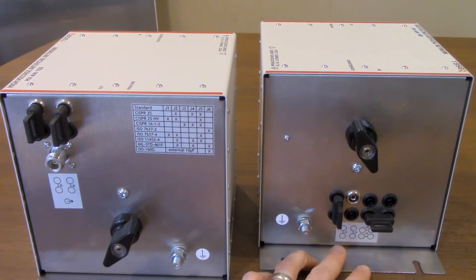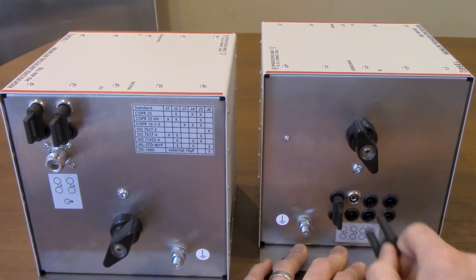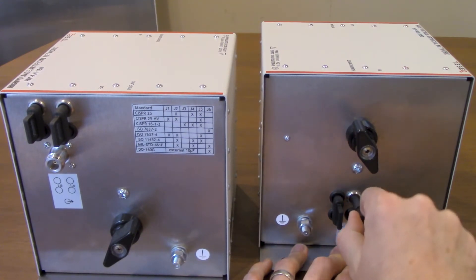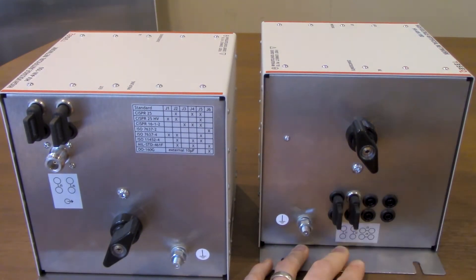It also requires jumper 2 for the high voltage component of CISPR 25. So we're going to remove this jumper right here, just pulls out, we're going to put it in the appropriate spot, just going to be right there, make sure we have a good connection.